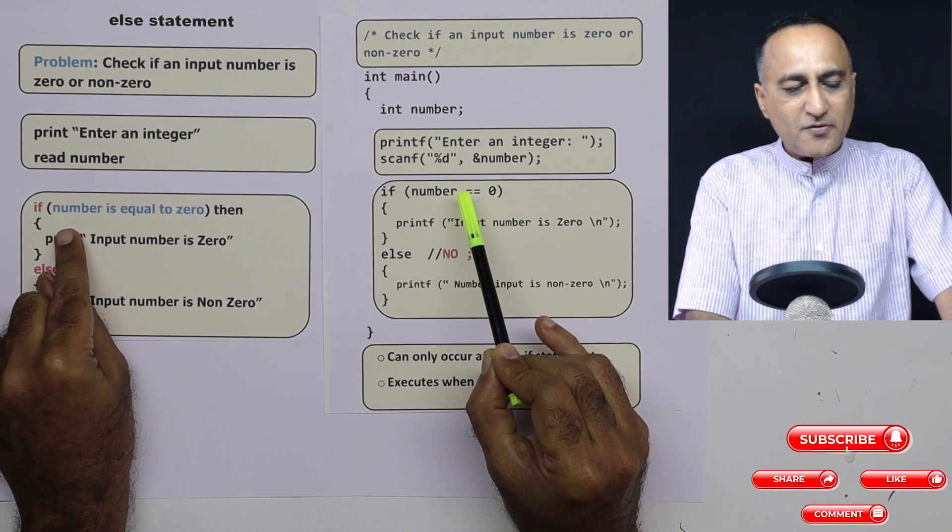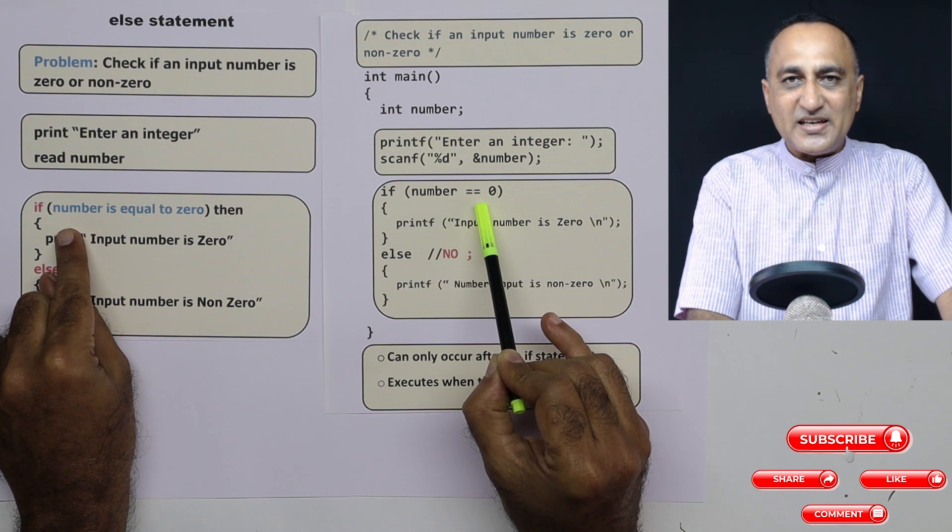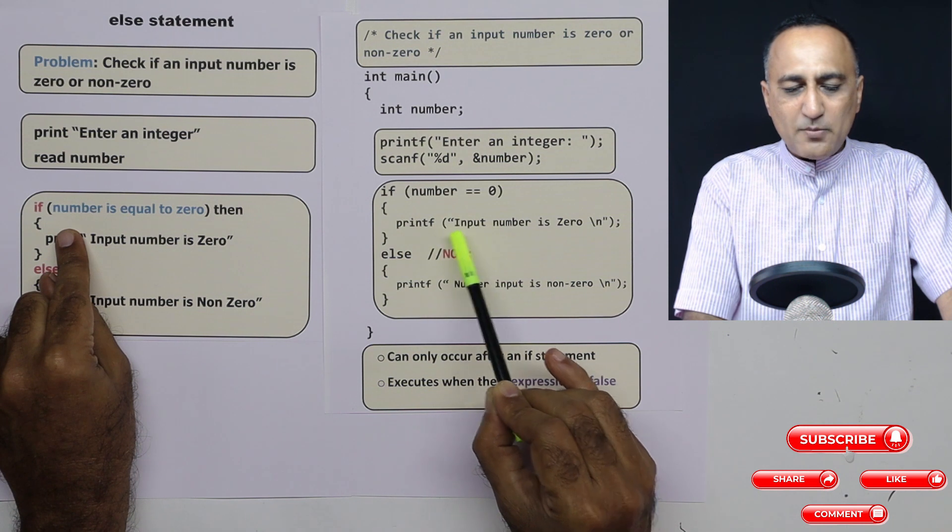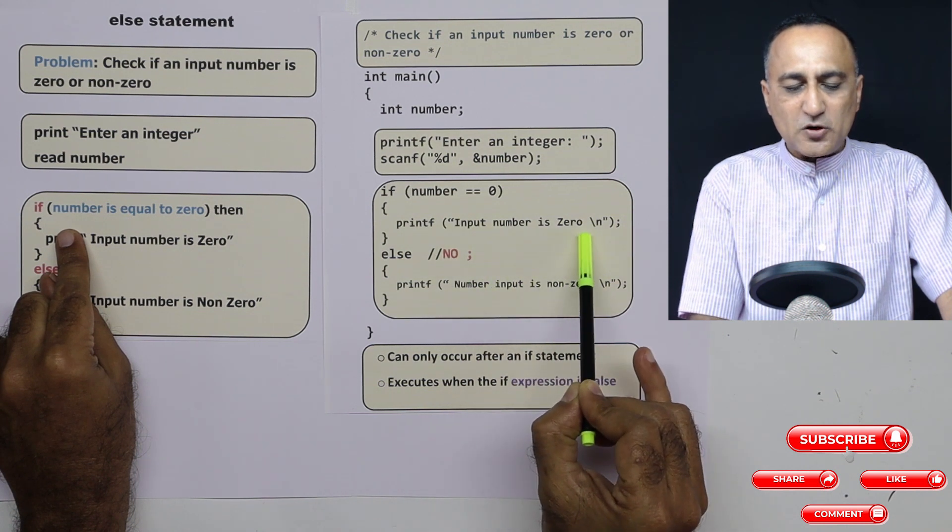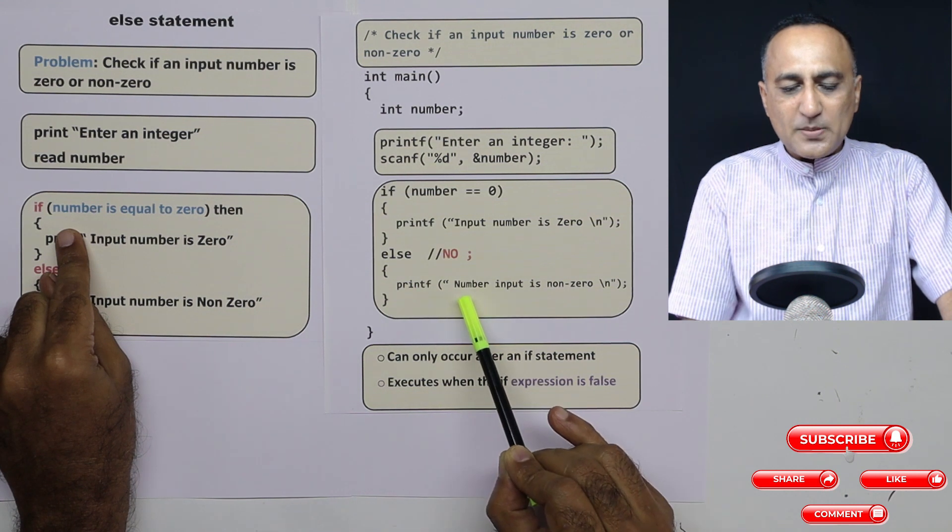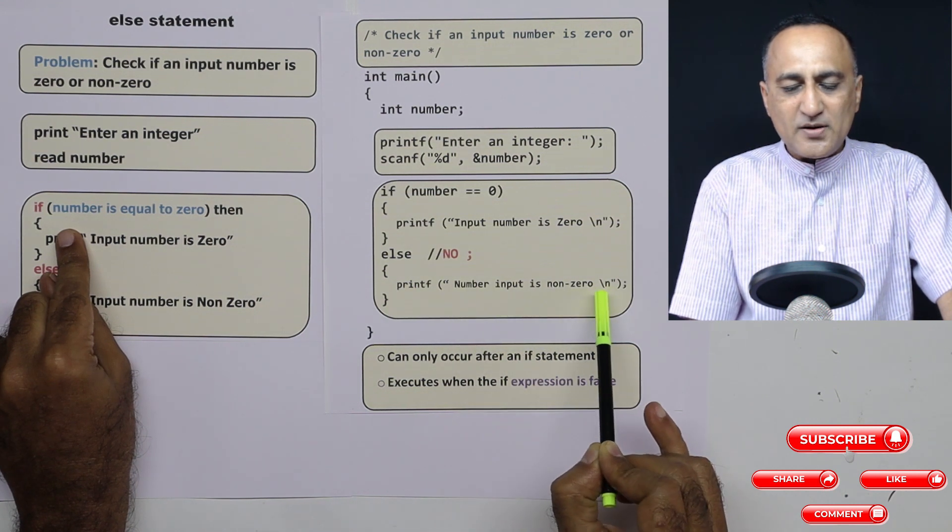Then instead of English, I am using the C syntax. I am saying if number is equal to zero, then I'm going to print input number is zero. If the number did not happen to be zero, then I'm going to say print number input is non-zero.